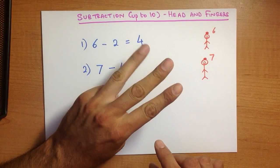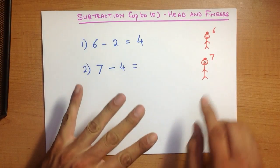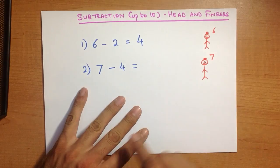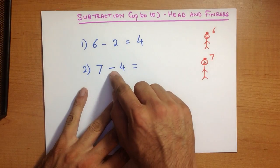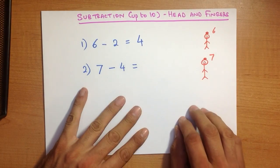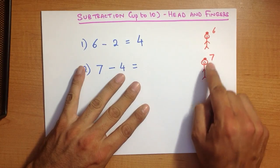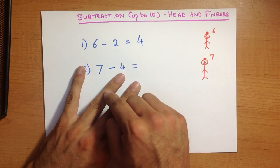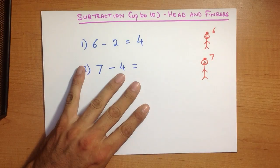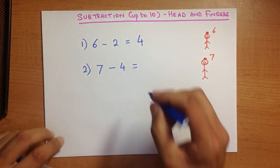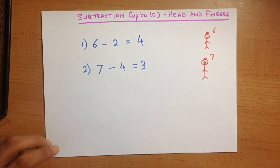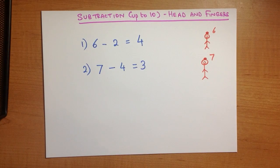1, 2, 3, 4. There is 7 on my head, 4 in my hand. We are going to take away or minus: 7, 6, 5, 4, 3. And that is our answer. 3. 7 minus 4 equals 3.